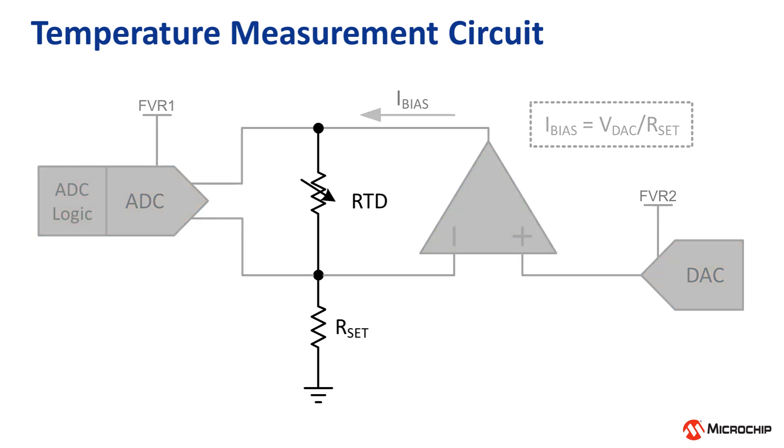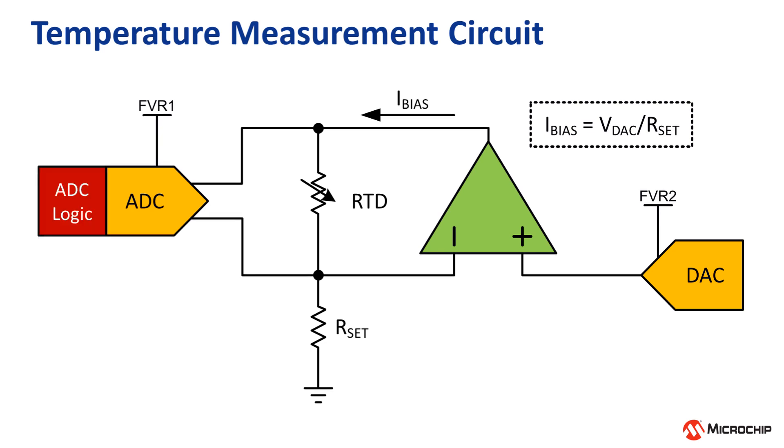First, the APM will enable the op-amp, DAC, FVR, and analog side of the ADC. Then, it will wait a few microseconds for analog values to settle. The APM will then enable the digital side of the ADC.